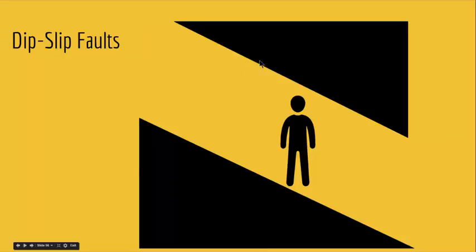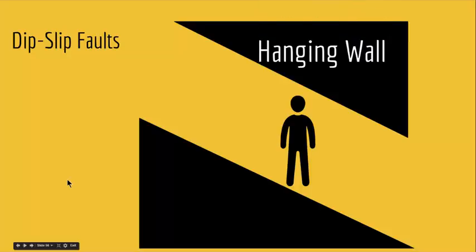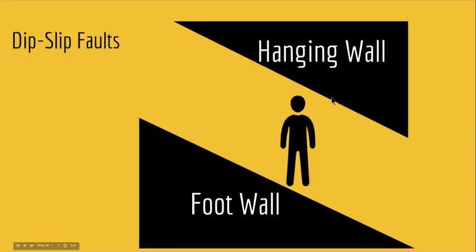Geologists call the upper part a hanging wall, and the lower part a foot wall. In a dip-slip fault, the part that is over your head is called a hanging wall, and the part that is under your foot is called a foot wall. Depending on whether the hanging wall or foot wall goes up or down, we get three types of dip-slip faults: normal faults, reverse faults, and thrust faults.